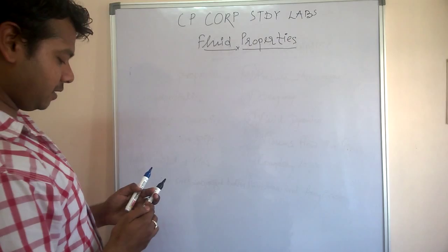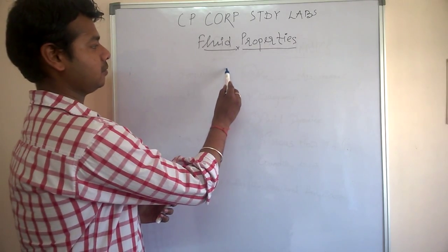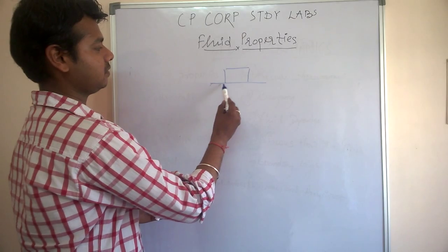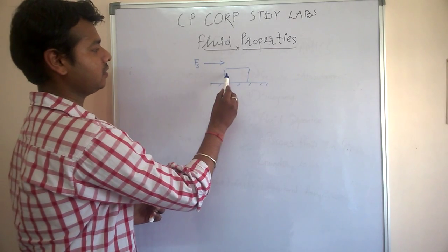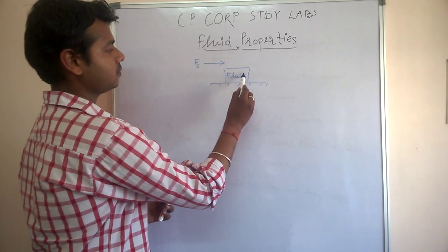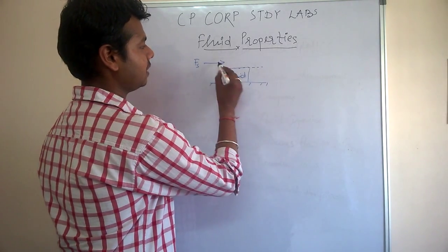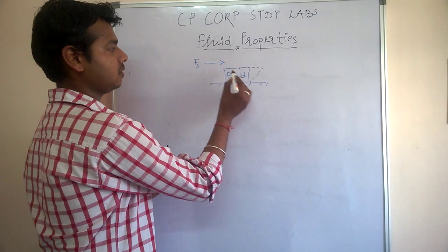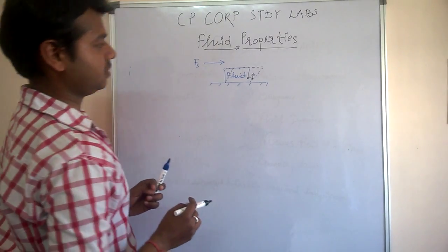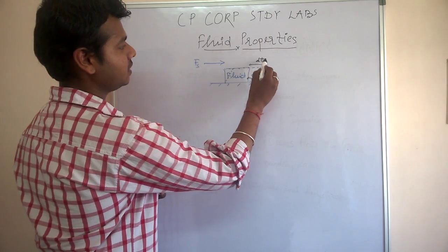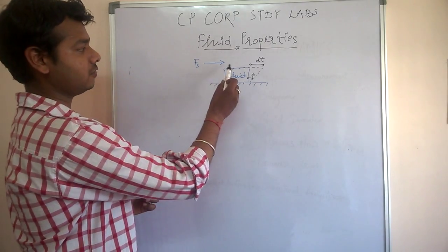What are the properties we are going to see? First of all, what is a fluid? Suppose we take an element and it is on a surface. If we apply a shear force Fs on the surface of this fluid, what is it going to do? It will deform. When a force Fs is applied, the fluid will deform continuously over time dt. So a fluid is a substance which deforms continuously under a shear force when acted upon on its surface.